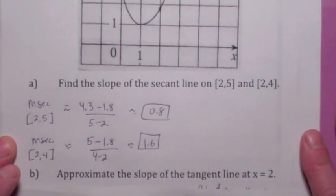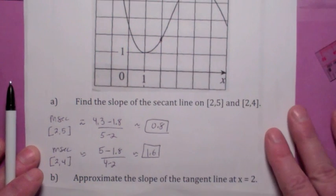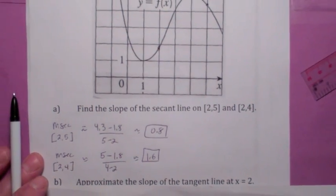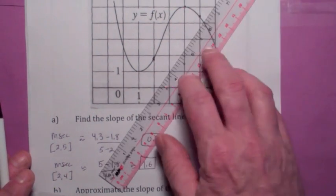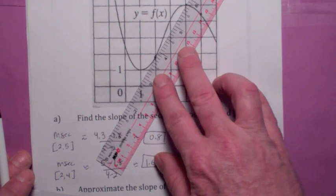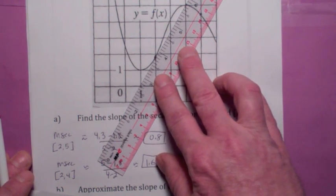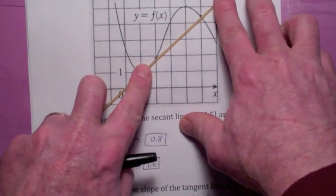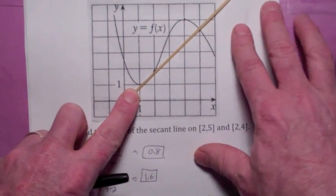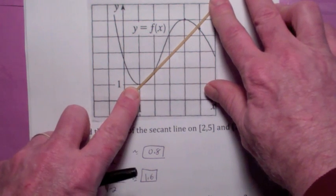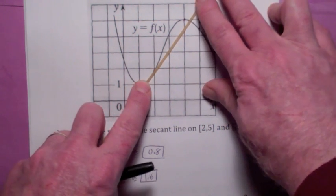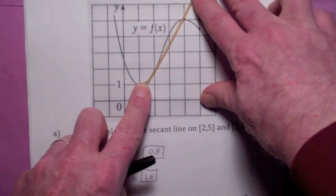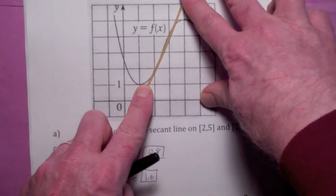What if you wanted to approximate the slope of the tangent line at x equals 2? The tangent line means you're trying to find a line that has the same slope as the curve does there, going through the point when x equals 2. If you fix this point when x is 2 and move a second point along the graph, as the second point gets closer and closer to the first point, the secant line slope becomes a better approximation to the tangent line slope. The closer the second point gets to x equals 2, the better the approximation.